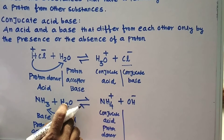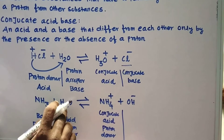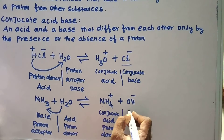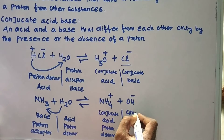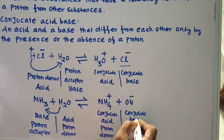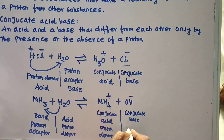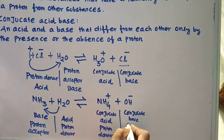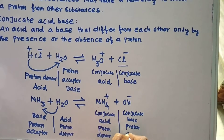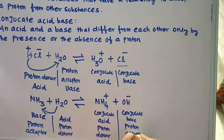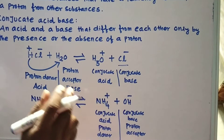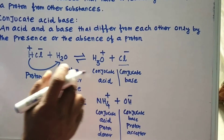After donating a proton to ammonia, the water becomes OH⁻. Therefore, OH⁻ is the conjugate base. This is the Brønsted-Lowry conjugate acid-base theory.